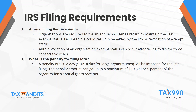For an organization to maintain their tax-exempt status and remain compliant with the IRS, they are required to file a 990 series return on an annual basis. If an organization fails to file a return for three consecutive years, it will risk losing its exempt status. Additionally, penalties may accrue with each year that you don't file. A penalty of $20 a day, or $105 a day for larger organizations, may be imposed for late filing, up to a maximum of $10,500 or 5% of the organization's annual gross receipts.